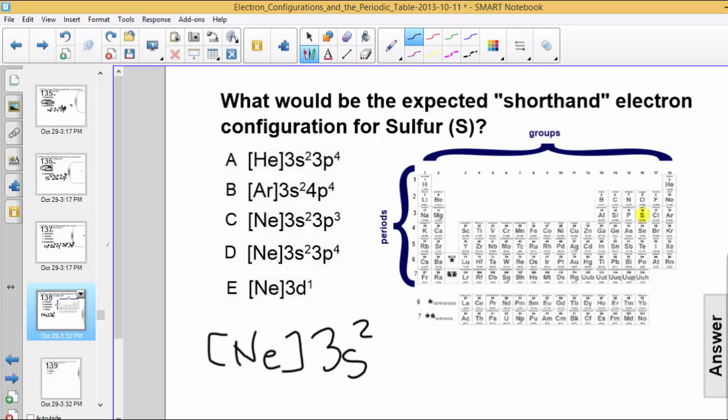And again, we need to get to 16. The next sublevel we go to is the 3p sublevel. And because we're trying to get to 16, we presently have 12, we put a total of 4 electrons into the 3p sublevel. And that would give us a total of 16.